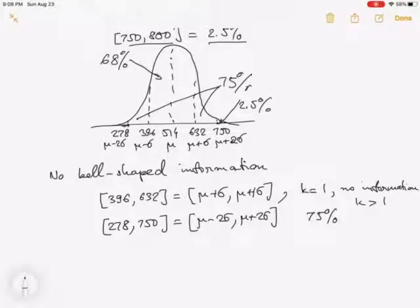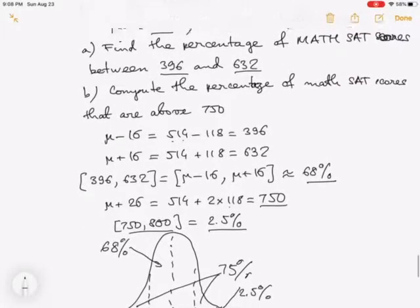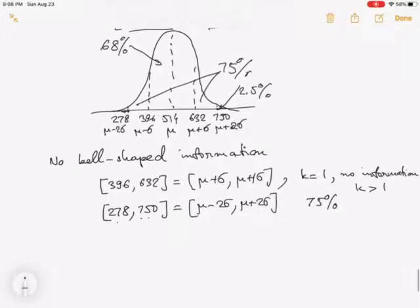For the interval from 278 to 750, this is the interval from mu minus 2 sigma to mu plus 2 sigma. At least three-fourths or 75 percent of the data values will fall within these two numbers. That means on this interval, at least 75 percent of students get that score. If you use the empirical rule, you would get 95 percent on that interval. But from Chebyshev's rule, we can say only that it is 75 percent. What's the reason? The reason is because we don't know whether the shape here is bell-shaped or not.